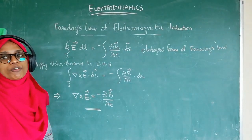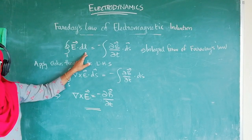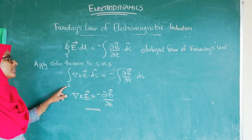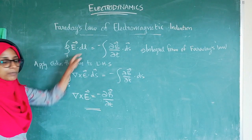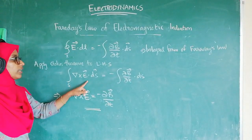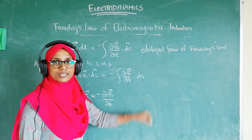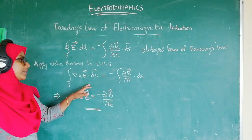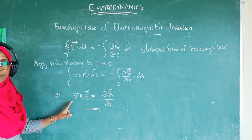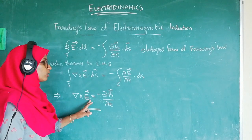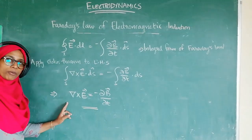Now we derive the differential form of Faraday's law. Applying Stokes' theorem to the left-hand side, the line integral of E·dL is converted into the surface integral of curl E·dS, which equals minus the surface integral of ∂B/∂t·dS. Since both sides are surface integrals over the same surface, we can write: curl E equals minus ∂B/∂t. That is the differential form of Faraday's law.